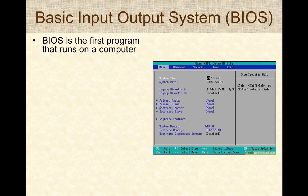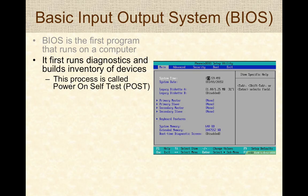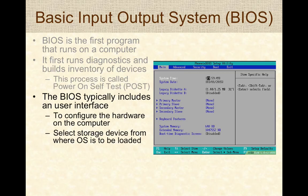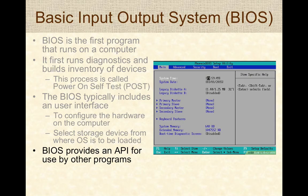The BIOS is the first program that runs on a computer. It first runs diagnostics and builds an inventory of different devices that are hardwired to the computer — this process is called power-on self-test, or POST. After POST, the BIOS typically presents a simple user interface that can be used to configure hardware or select the default device from which the operating system is to be loaded. The BIOS also provides a simple API used by other programs that are loaded by the BIOS.